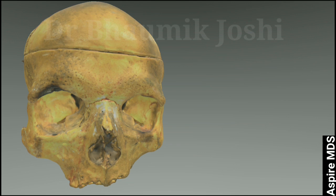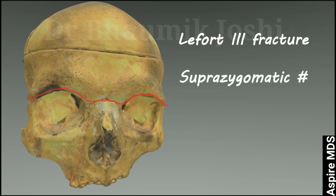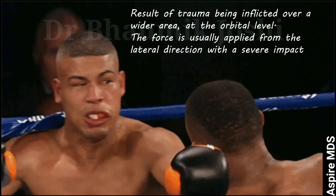LeFort III fractures — because the fracture line passes above the level of the zygomatic bone, they are called suprazygomatic fractures. Because the fracture line passes in a transverse manner, they are also called transverse fractures. And because the fracture line is at a higher level in the skull, they are also called high level fractures.